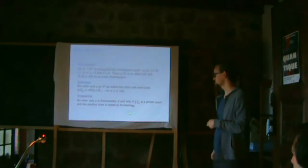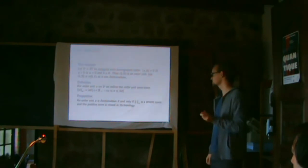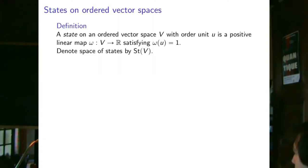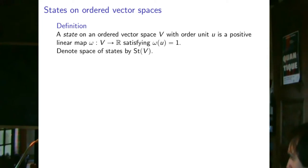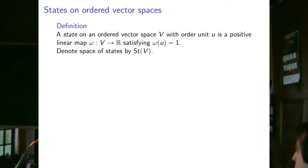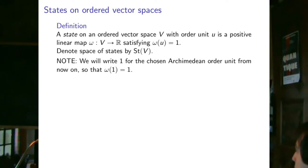Also there's the topological definition of order unit spaces. We can define a state of an order unit space: it's a linear map to the real numbers that maps the order unit to 1. The space of states is denoted with states(V), and a state ω just satisfies ω(u) = 1.